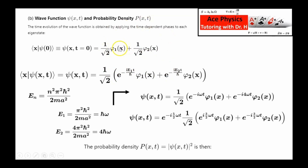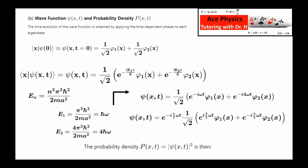Once you have the state in terms of energy eigenstates, you multiply each one by a phase factor: e to the minus i E_n t over h-bar, where n is the quantum number associated with the energy. In this case it's e to the minus i E1 t over h-bar times phi1, plus e to the minus i E2 t over h-bar times phi2. That's how you find the wave function for all time t greater than 0 for any quantum mechanics problem.